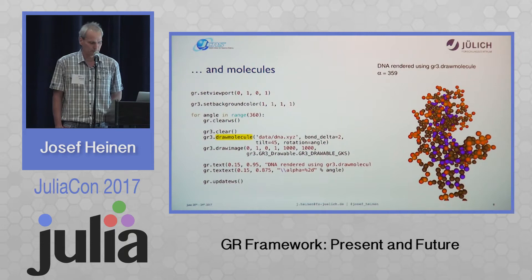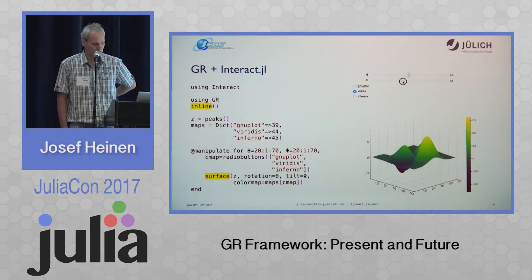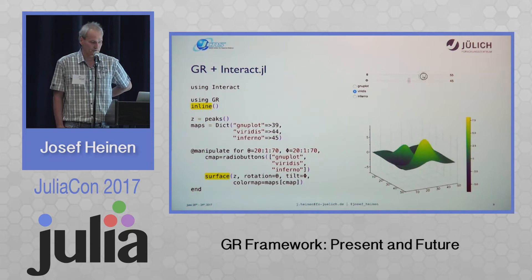GR is also capable of working together with Interact. You can use knobs to change the color map or to change the view angle for a three-dimensional scene which is generated by a simple surface command.